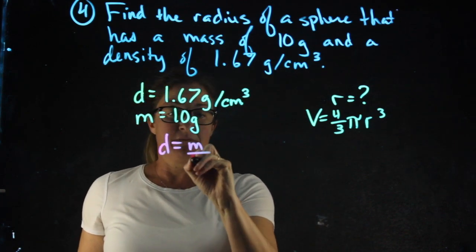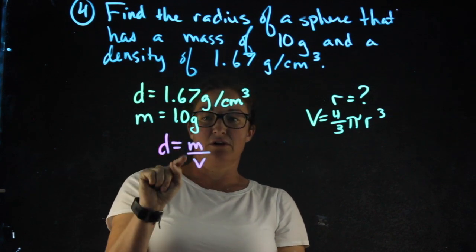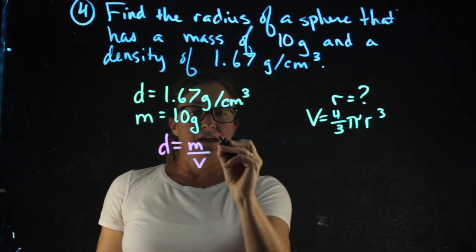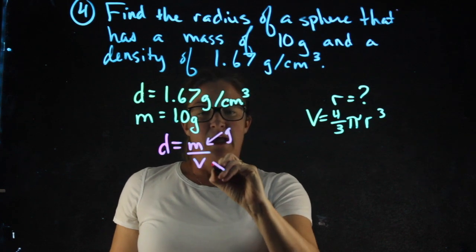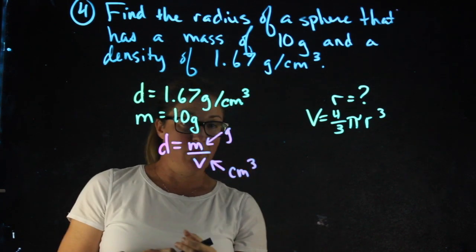Density equals mass over volume. My density is in the units of grams per centimeter cubed, so my mass will be in units of grams. And when I get my volume, it's going to be in centimeters cubed, which is exactly what I want it in.